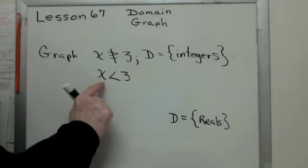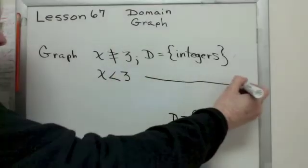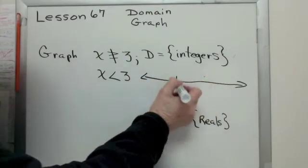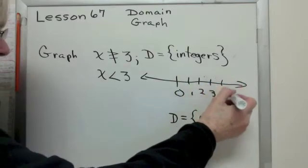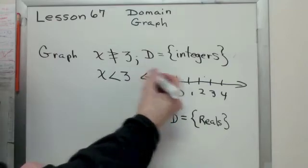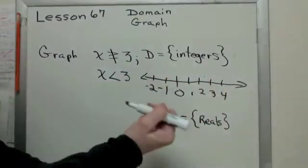Now, so x less than 3. So now I put a number line. Let's identify 0, 1, 2, 3, 4, minus 1, minus 2. Arrows on both ends means that the graph goes on indefinitely in both directions.